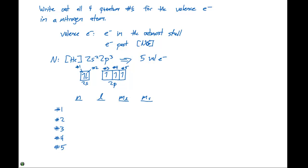The first electron is in a 2s orbital, so the principal quantum number n is 2, and the azimuthal quantum number l is 0. For an s orbital, m sub l is going to be 0, because m sub l ranges from +l to −l. And here we have a spin-up electron, so it gives an m sub s value of +1/2. This tells us exactly where in a particular orbital our electron is and what spin it has.